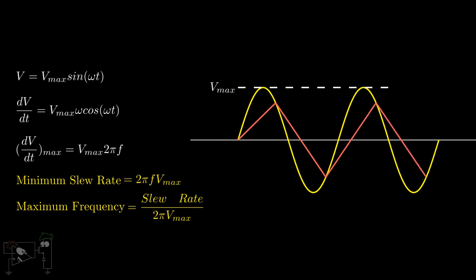For example, if we have a sinusoidal output with 10 volts amplitude and a frequency of 20 kilohertz, then the minimum slew rate required will be 2π times 20,000 times 10, which comes out to 1.257 times 10 to the power 6 volts per second.